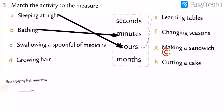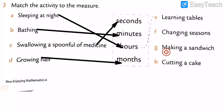Swirling a spoon of medicine — a second, minute, or hour? You are taking the medicine continuously, but swirling it is just a second. Got my points. And further is growing hair. Growing hair — your hair does not grow properly. If you give it time, you give one month, not an hour, not a minute, not a second. So the answer is: growing hair — a month. Note down all the answers in your book.